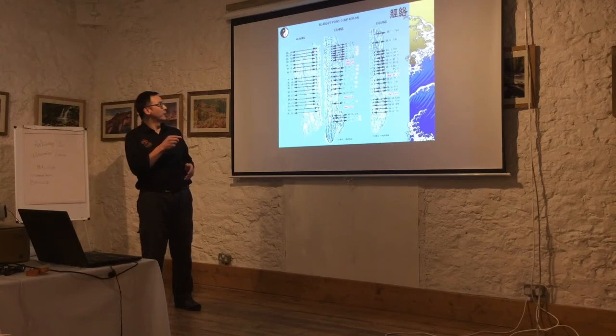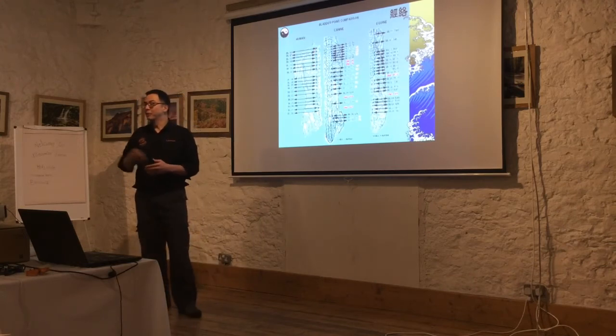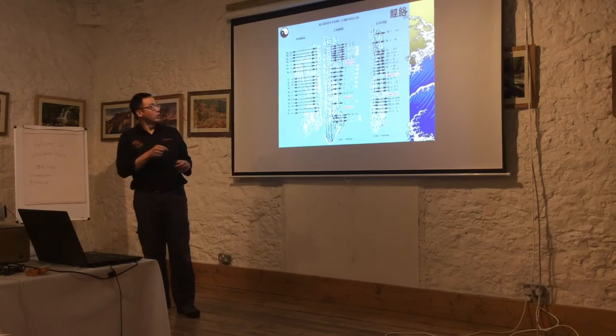For example, the first vertebra gives bladder 11, 12, 13, 14, 15 — that's how they're called. So bladder 13, bladder 14, and so on, each just corresponding to each vertebra.